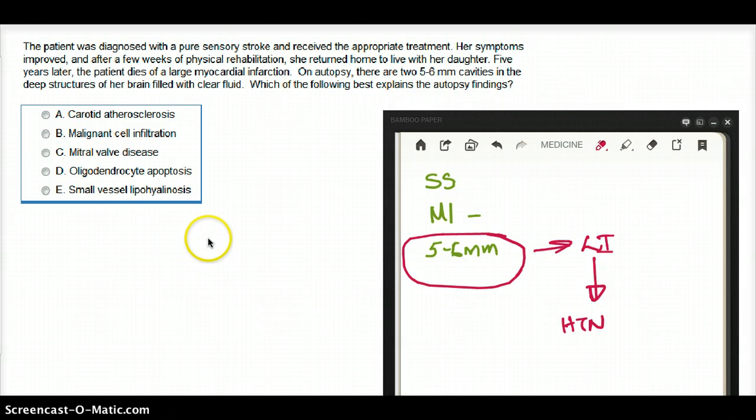I look for small vessels, I look for hyalinosis, and I know that this is lacunar infarcts because there's two small little pockets filled with clear fluid in the deep structures. And by deep structures, they mean basal ganglia, that area, the basal ganglia area.